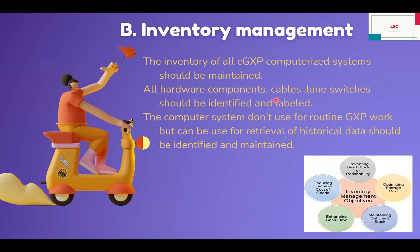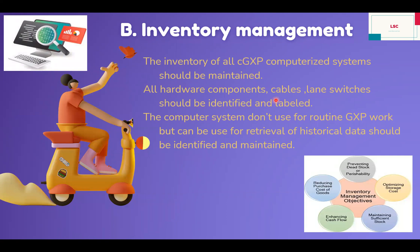B: Inventory management. Inventory of all CGXP computerized systems should be maintained. All hardware components, cables, lanes, and switches should be identified and labeled. Computer systems not used for routine GXP work but used for retrieval of historical data should also be identified and maintained — you should have a separate inventory management for all your GXP systems. Anyone should be able to easily identify the difference between both types.